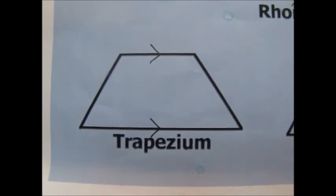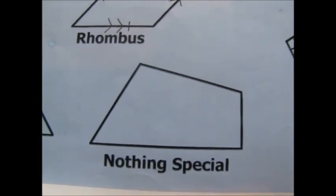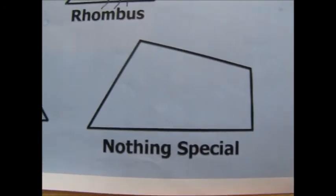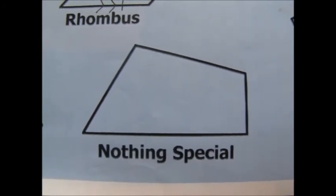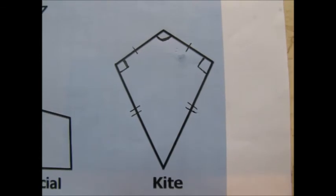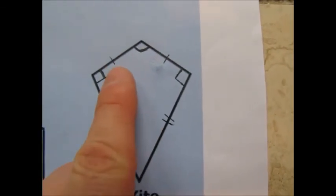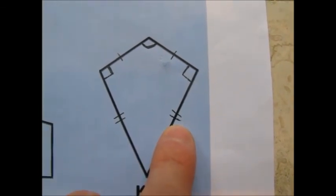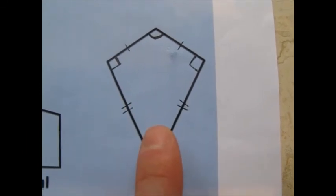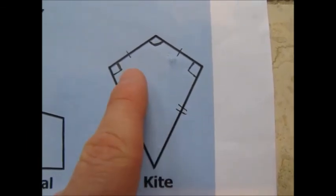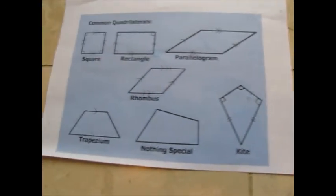The trapezium only has one pair of parallel sides — that's exactly what defines it. Then we have 'nothing special' — no pairs of parallel sides, no pairs of equal sides, just a boring quadrilateral. Finally there's the kite, which has no pairs of parallel sides but does have two pairs of equal length sides, and this particular kite also has two right angles.